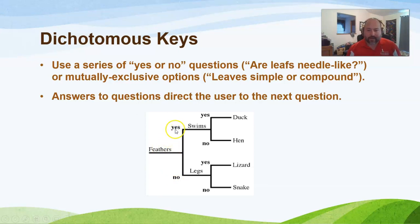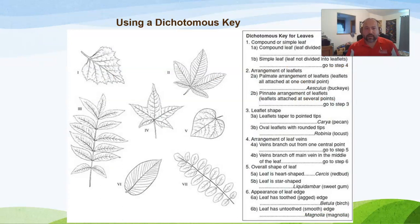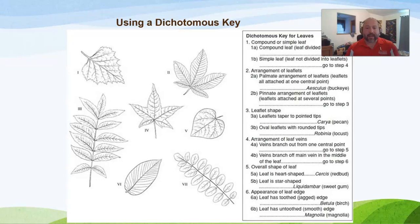For example, a simple key might ask: does it have feathers? If yes — does it swim? If it swims and has feathers, it's a duck; if it has feathers but doesn't swim, it's a hen. Obviously tree keys are more complicated, but the principle is the same. You'll learn terms like compound leaf, simple leaf, palmate, pinnate, veins, and margins — serrated or entire — and work through each step.